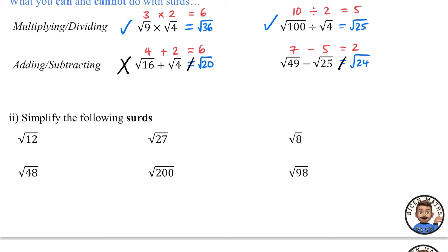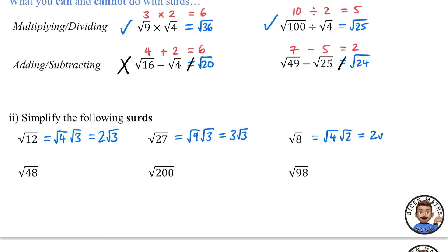The other skill you need is simplifying surds. Split the number under the root into a square number and a non-square number. For √12: that's √4 × √3 = 2√3. For √27: that's √9 × √3 = 3√3. For √8: that's √4 × √2 = 2√2. Always pick the biggest square number you can. For √48: use 16 × 3, so √16 × √3 = 4√3.